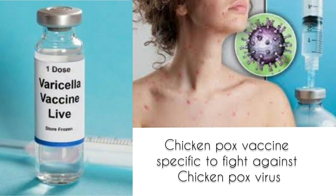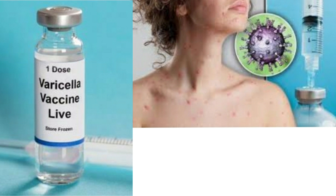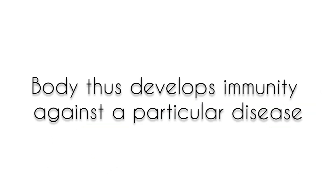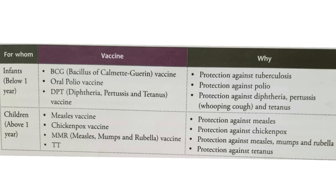The antibodies attack and destroy the weakened microbe that has been injected, and they remain in the blood. In future, if there is any attack by that particular pathogen, these antibodies will be ready to fight that microorganism. In this way, the body develops immunity against a particular disease.